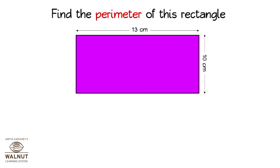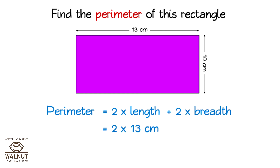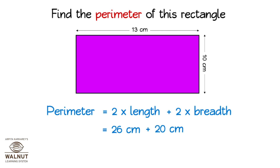Find the perimeter of this rectangle. Let us use the formula. Perimeter of a rectangle is 2 into length plus 2 into breadth. We know the length and breadth, so we put those values in. That is 2 into 13 cm plus 2 into 10 cm, which is 26 cm plus 20 cm. We get the perimeter: 46 cm.